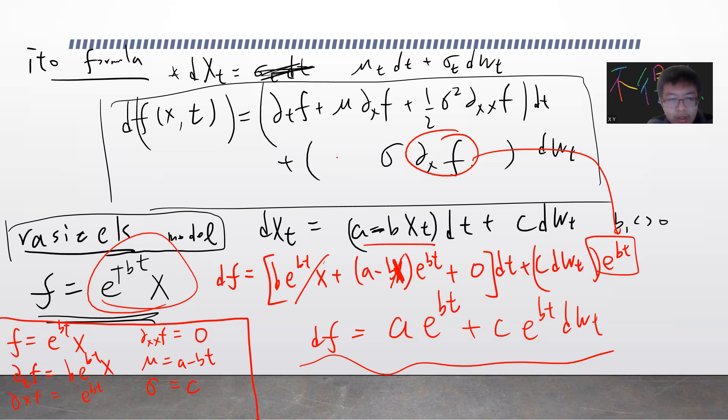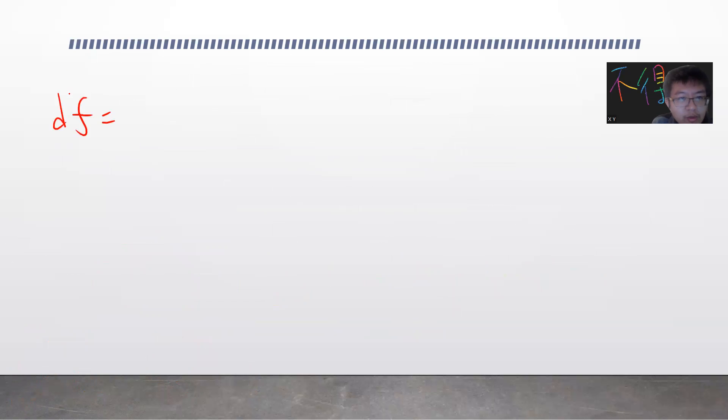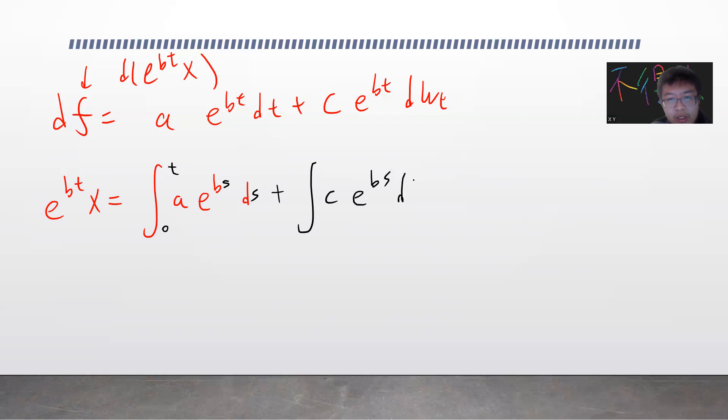Now we can solve this because the right-hand side doesn't contain X. We get df = a e^(bt) dt + c e^(bt) dWt. Remember df is e^(bt)X. Now we integrate: e^(bt)X equals integral from 0 to t of a e^(bs) ds using dummy variable s, plus c integral from 0 to t of e^(bs) dWs plus X₀.